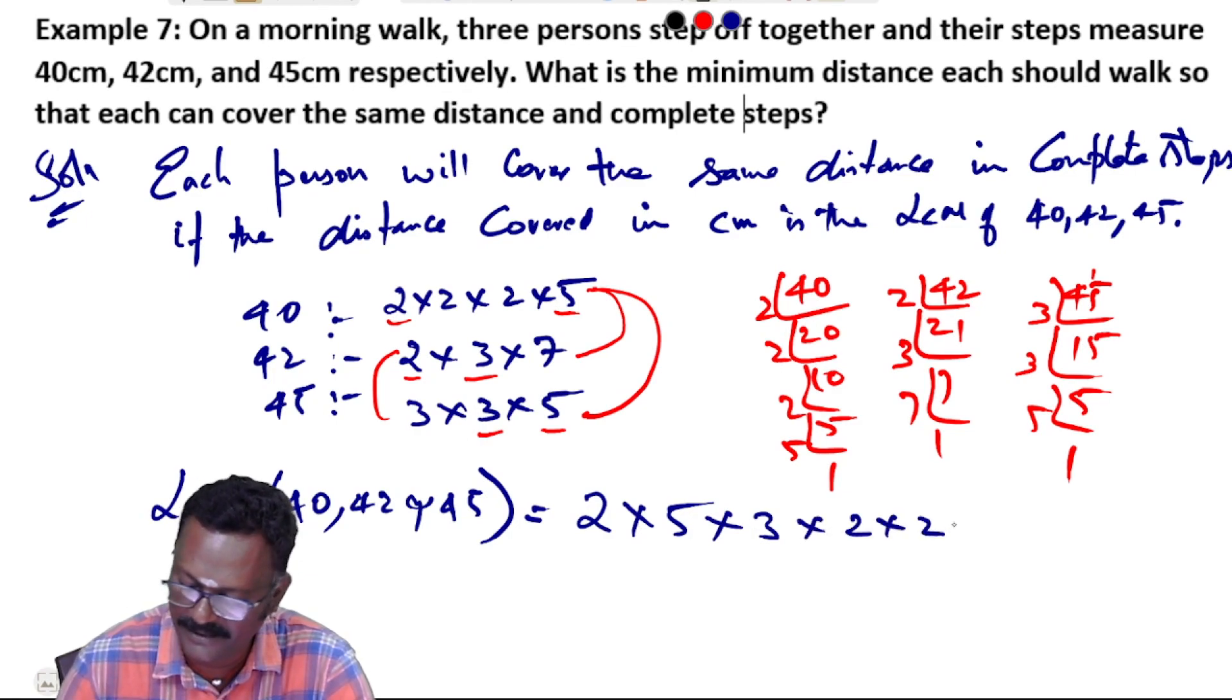So we have 2 into 2 into 2 into 7 into 3 into 3 into 5. That's eight times. Then 3 times gives 9. Then 5, then 7.